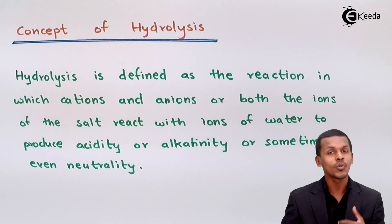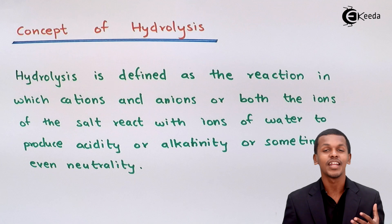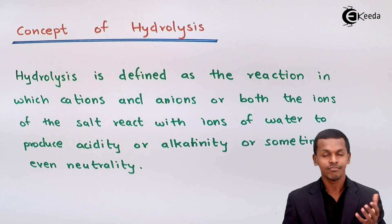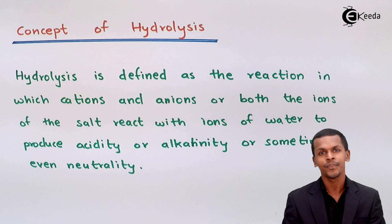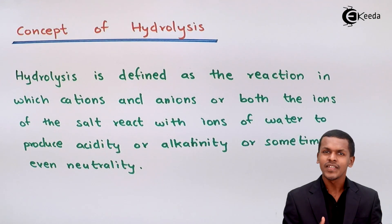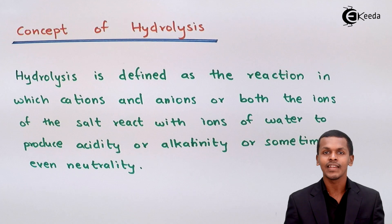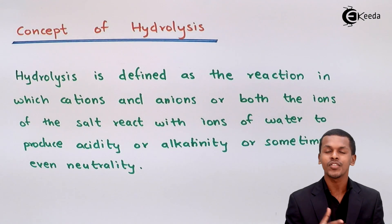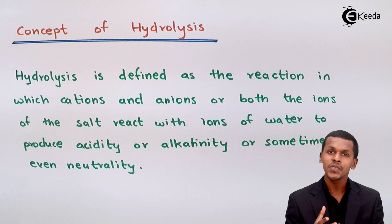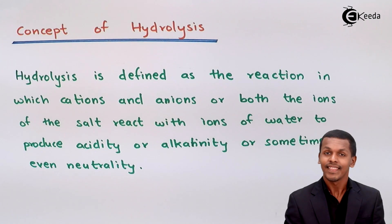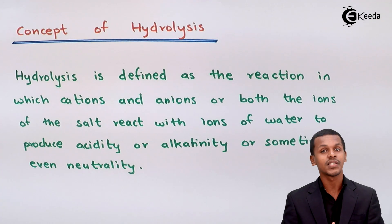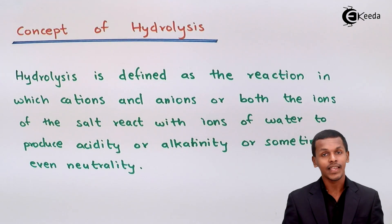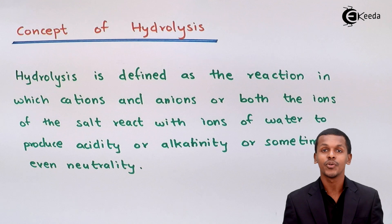For example, if we dissolve NaCl in water, the solution doesn't become acidic or basic — it remains neutral. This is because NaCl is derived from a strong acid and a strong base. It doesn't affect the concentration of H⁺ or OH⁻ ions. However, certain salts when added to water can turn the solution acidic or basic, and that is why the concept of hydrolysis plays a very important role.